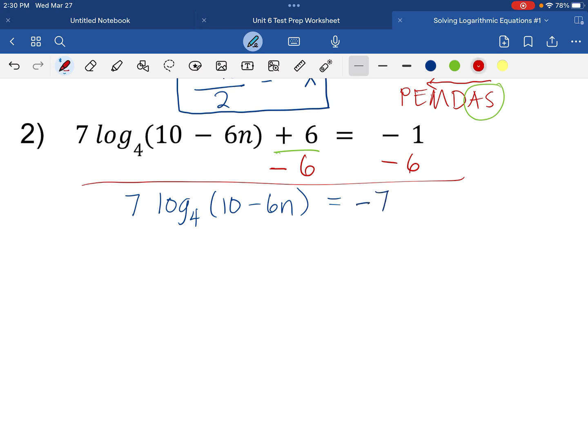So that would leave us with 7 log of 10 minus 6n with base 4 equals negative 7. We want to get rid of this 7 by dividing both sides by 7. And so that would leave us with log of 10 minus 6n with base 4 equals negative 1.